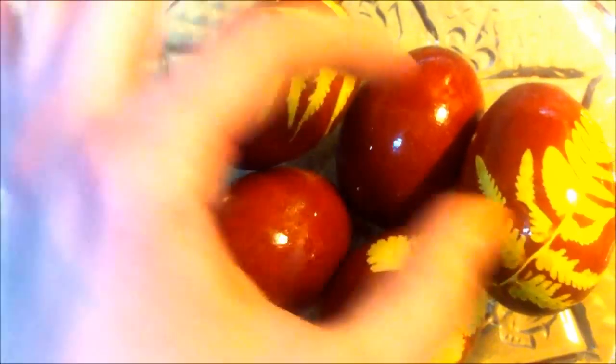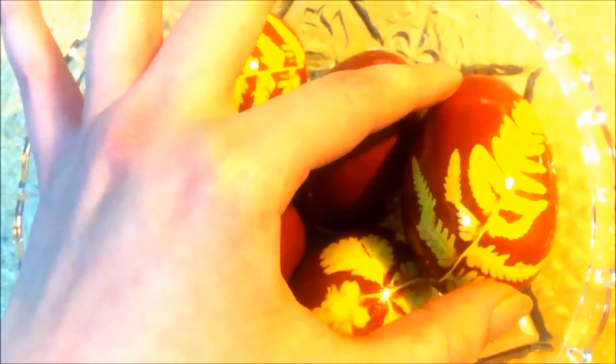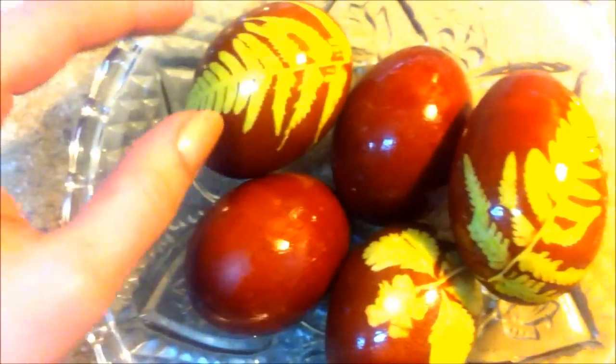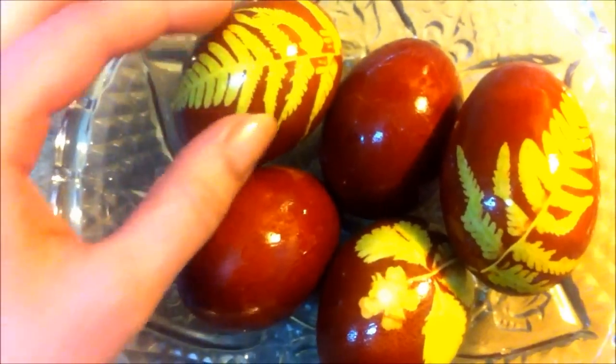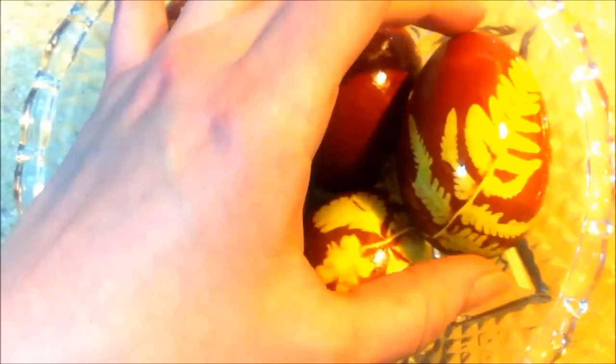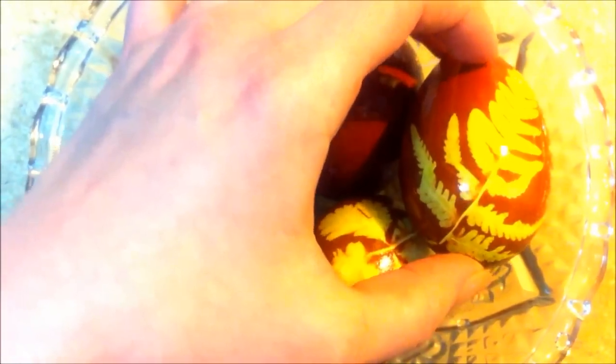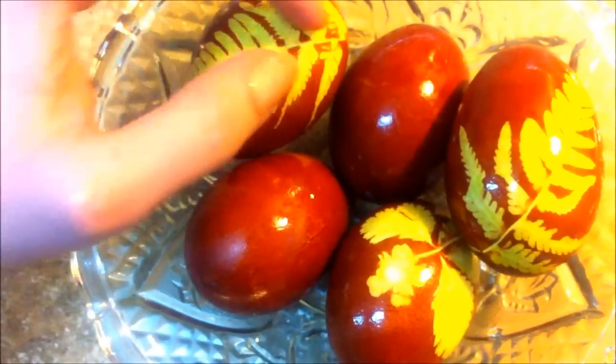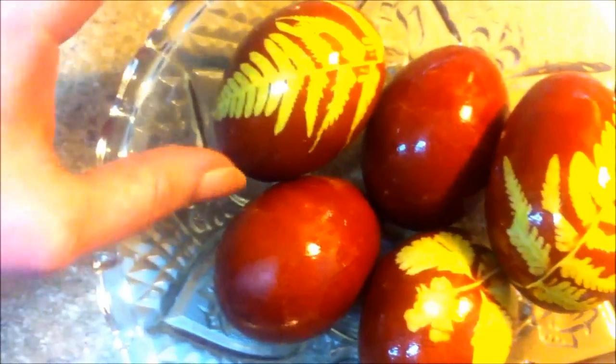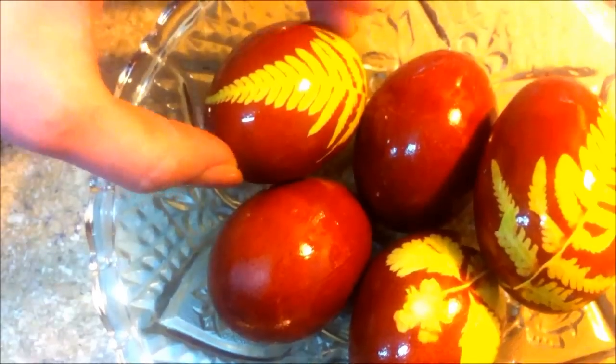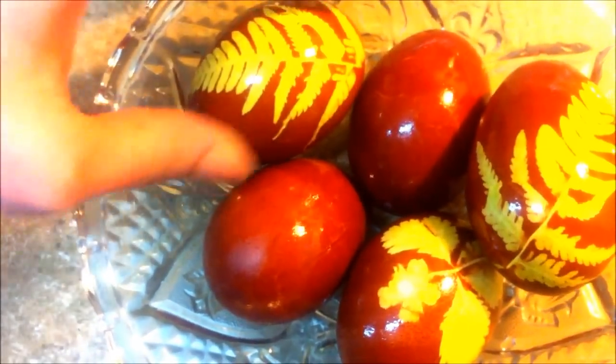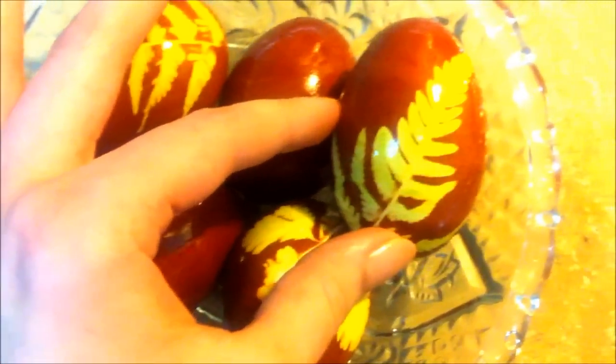On Easter we would hard boil eggs, color them and make different applications in them. These eggs are made with just shell from the onions and with some pieces. It's really easy to make. They didn't turn out all the way I would want it to be but they still look pretty nice.